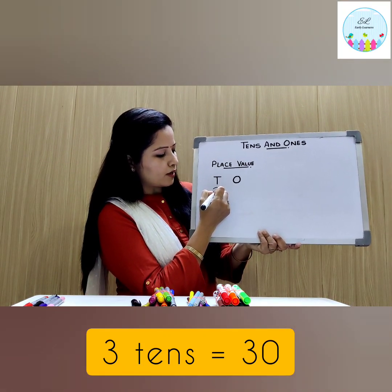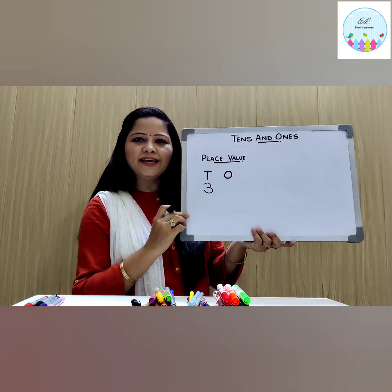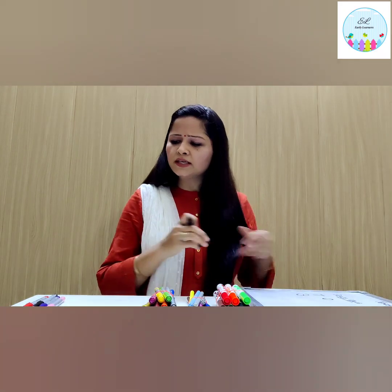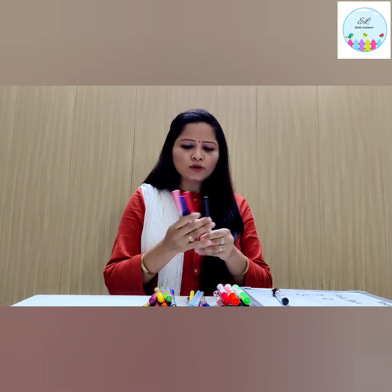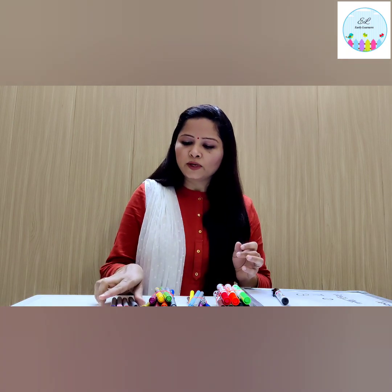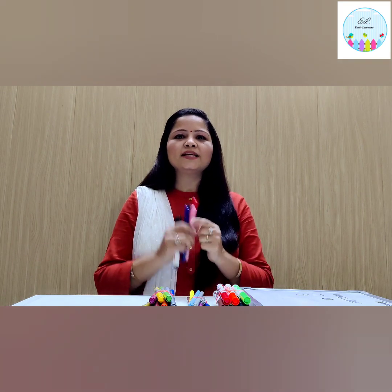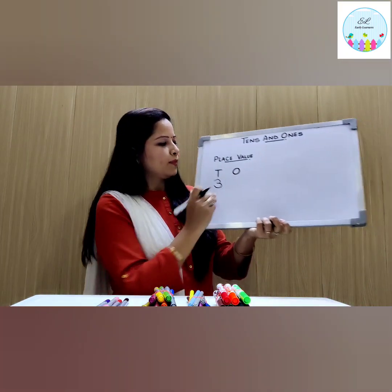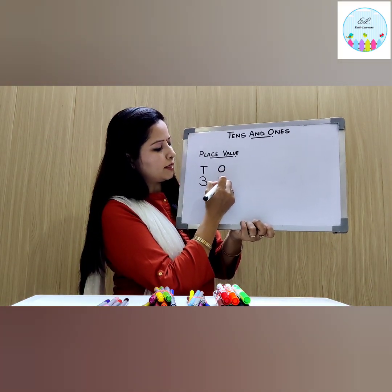3 tens means I will write number 3 under T. This is 3 tens. Now there are a few more sketch pens which are left. How many are these? 1, 2, 3, 4. So these are 4 sketch pens but I cannot tie them in a bundle. These are 4 loose sketch pens which I will keep here. That means 4 ones — 4 loose sketch pens which we cannot tie in a group or a bundle means 4 ones.